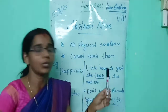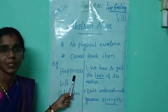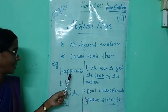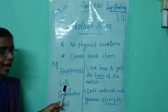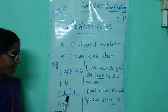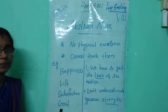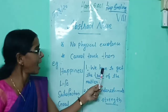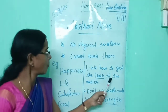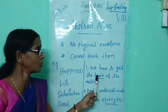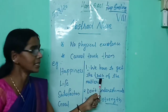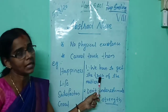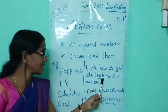Now move on to the examples. First word: happiness. It has no physical existence; we cannot touch it. Next words: life, satisfaction. Now the sentence: 'We have to get the truth of the matter.' Which is the abstract noun in this sentence? Truth is the abstract noun in this sentence.